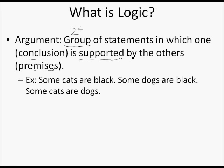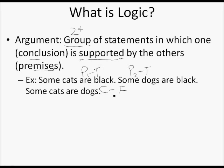Here's an example argument. Premise one: some cats are black — that's true. Premise two: some dogs are black — also true. Conclusion: some cats are dogs. This is a false statement. But this is still a real argument — it has two premises, each of which can be true or false, and a conclusion which can also be true or false. In this case the conclusion is false.